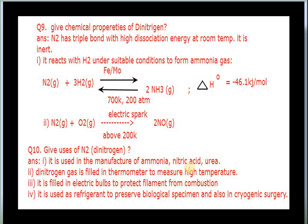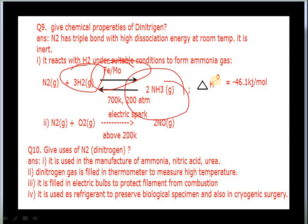Chemical properties of dinitrogen: N₂ has a triple bond and is inert at room temperature. At high temperature and pressure, N₂ reacts with H₂ in the presence of iron and molybdenum catalyst to form ammonia — this is the Haber process, carried out at 700 K and 200 atm pressure. N₂ also reacts with oxygen in the presence of electric discharge at around 2000 K to form NO.